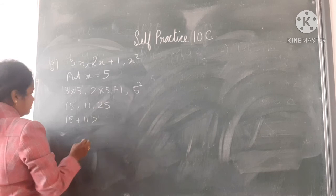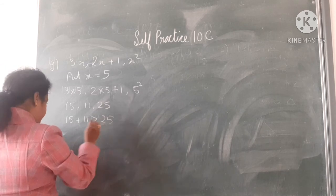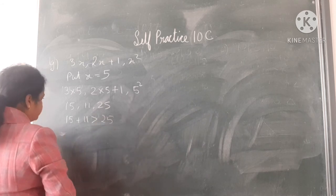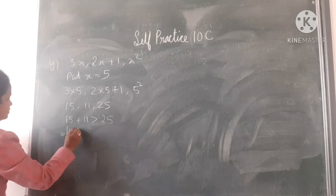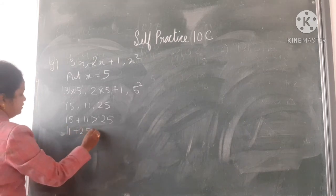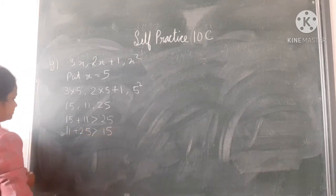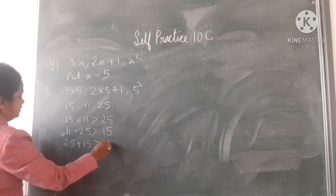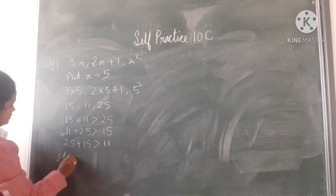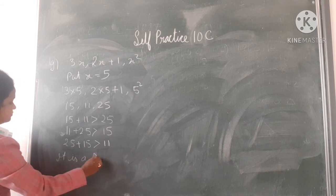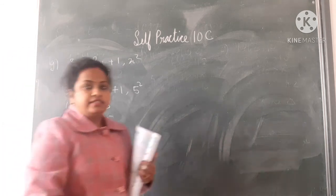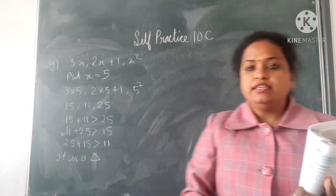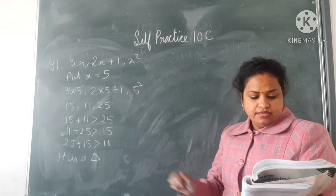15 plus 11, is it greater than 25? Yes. 11 plus 25 is greater than 15, and 25 plus 15 is greater than 11. All three conditions are satisfied, so it is a triangle.